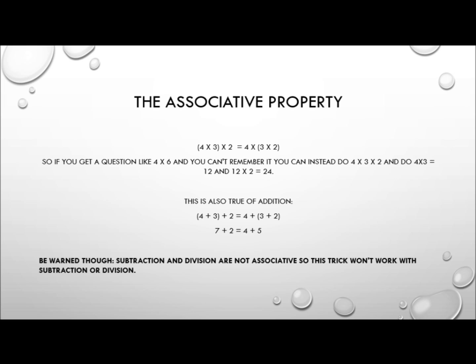This is also true of addition. For example, 4 plus 3 and then add 2 is equal to 4 plus all of 3 plus 2. So 7 plus 2 is the same as 4 plus 5. Remember, this does not work for subtraction and division — they are not associative. This trick only works with multiplication and addition.